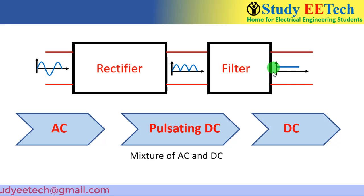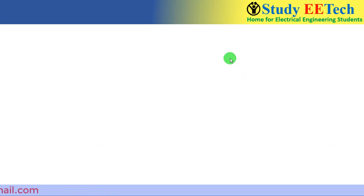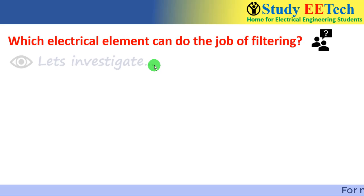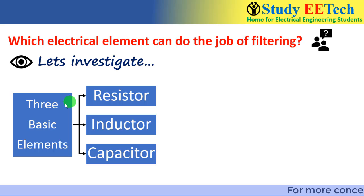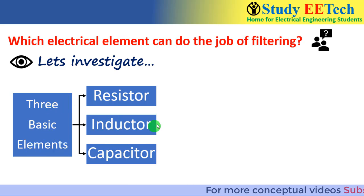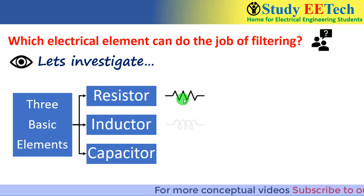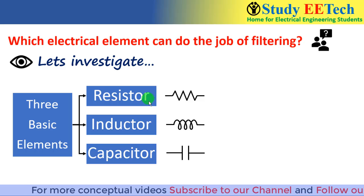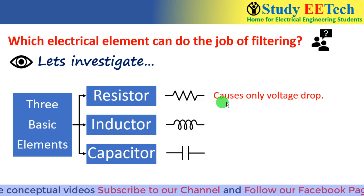Which electrical element can perform this job? That is our question, and it is very interesting. We know the three basic electrical elements are resistor, inductor, and capacitor. The property of the resistor is that it can only cause a voltage drop.